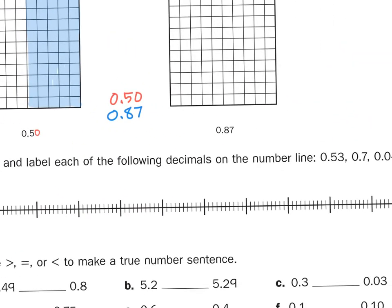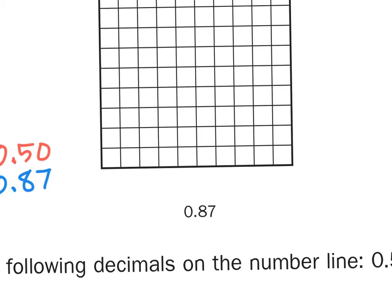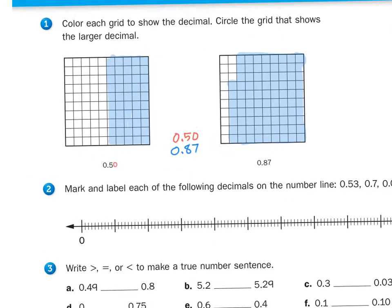And then here will be 87 hundredths, so I have to first block off 80 hundredths, or 8 tenths, and then I'm going to have 7 more. So, 87. And if you noticed, I started on the right side of the square and I worked my way to the left. It really doesn't matter where you begin shading in your squares, as long as 87 of them are shaded in. It usually helps if they're in columns and rows.